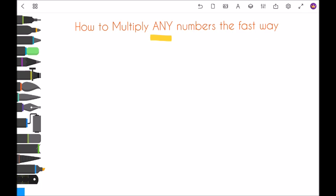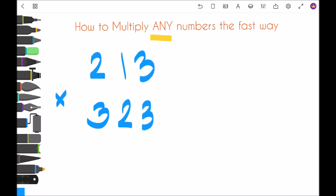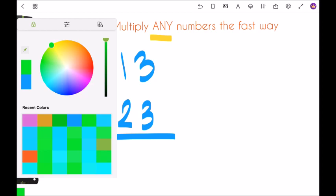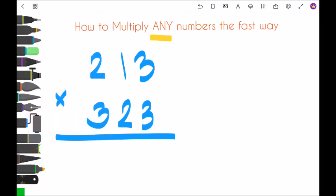So let's say 213 times 323. So in here, since we have three digits, we use the technique, the cross technique.